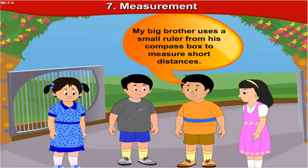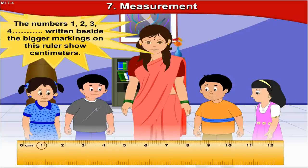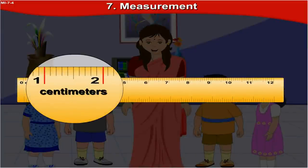My big brother uses a small ruler from his compass box to measure short distances. Now that you've spoken about a ruler, let me show you one. The numbers 1, 2, 3, 4 and so on, written beside the bigger markings on this ruler, show centimeters.